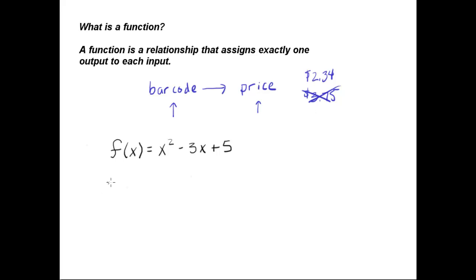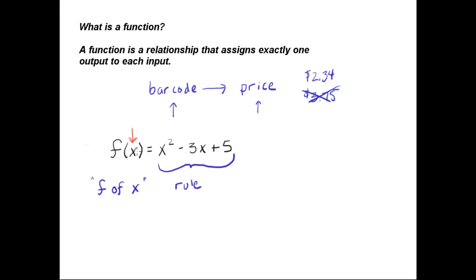When we use functions, we often like to use function notation. Function notation is written in the form f of x equals something over here, which is our rule for our function. This part here is our input, and over here this is our output.